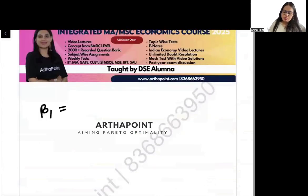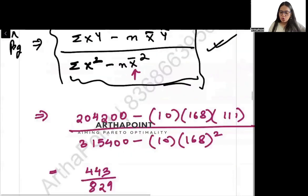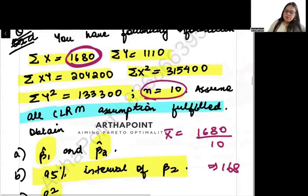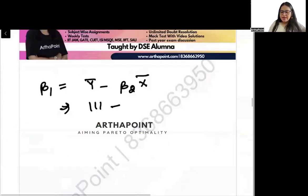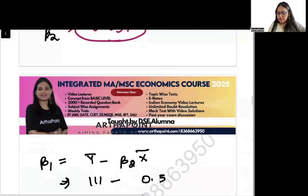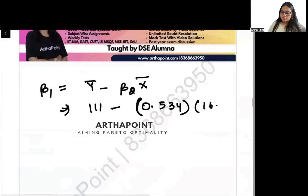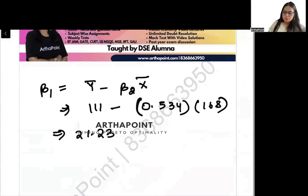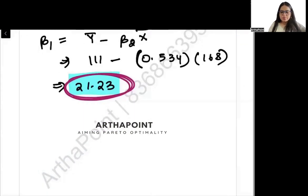Now let us find beta_1 hat. Beta_1 hat = y-bar minus beta_2 times x-bar. Mean of y is summation y divided by n = 111. Beta_2 is 0.534 and x-bar is 168. So beta_1 hat = 111 minus 0.534 times 168, which gives approximately 21.23.